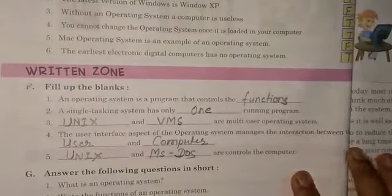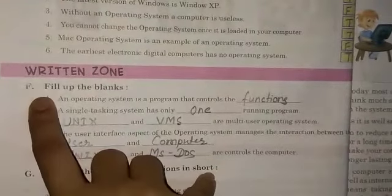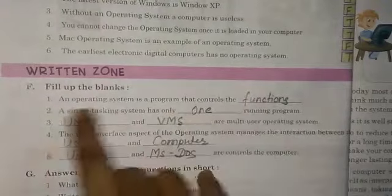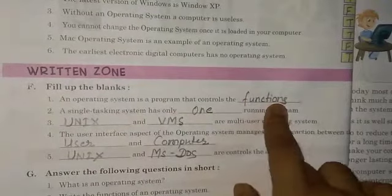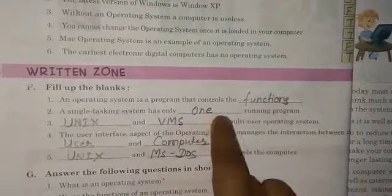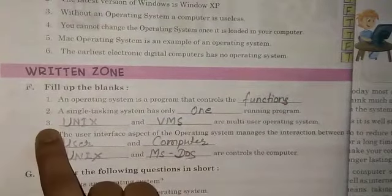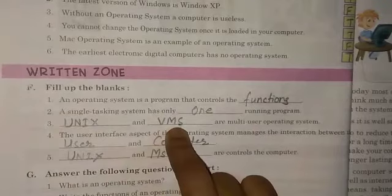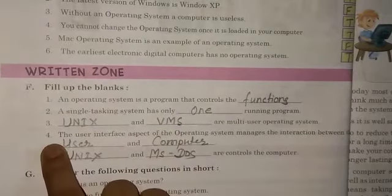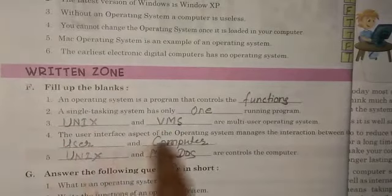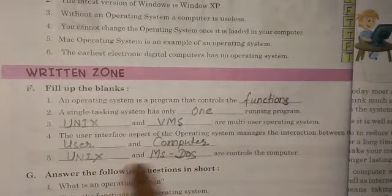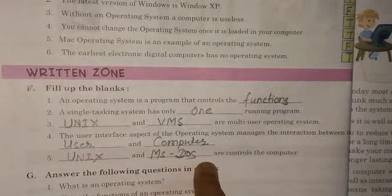Fill in the blanks. No. 1 — Functions. No. 2 — 1. No. 3 — Unix and VMS. No. 4 — User and Computer. No. 5 — Unix and MS-DOS.